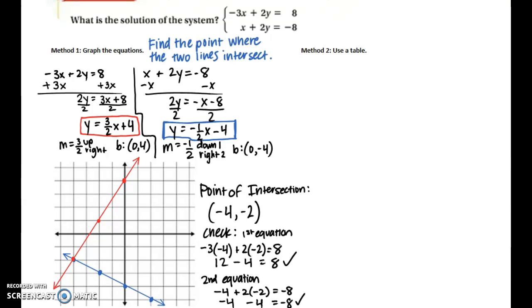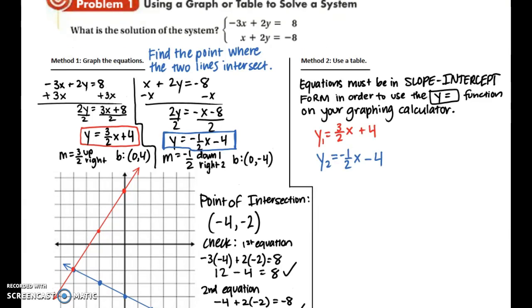Now I'm going to show you how to do the same problem, but instead of using a graph, we're going to be using a table. So in order to use the y equals function on your graphing calculator, the equations must be in slope intercept form. And the good thing is that we already did that in the method 1 on the left side. So now I'm going to teach you how to use your graphing calculator to type these in and then use a table to find out where the two lines intersect.